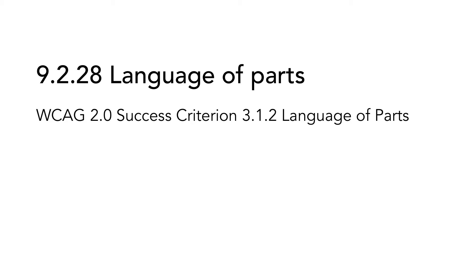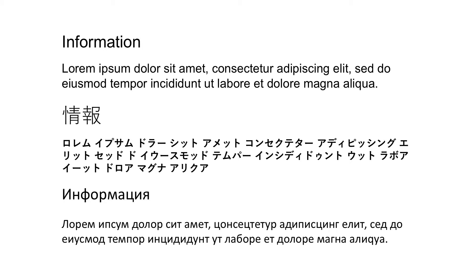9.2.28 Language of Parts is based on WCAG 2.0 Success Criterion 3.1.2 Language of Parts. When webpages contain text in more than one language, the parts of the page that are written in another language than the main language of the page have to be defined as well. This is done by using the lang attribute on an element that encapsulates the part of the text that is written in another language. You do not have to do this if the text consists of proper names, technical terms or words of indeterminable language. Also, words or phrases that have become part of the default language is an exception.